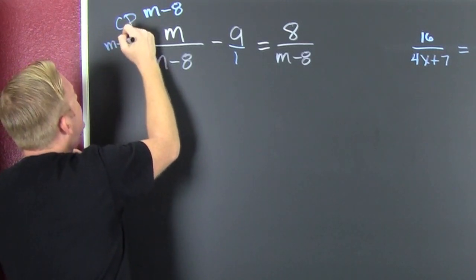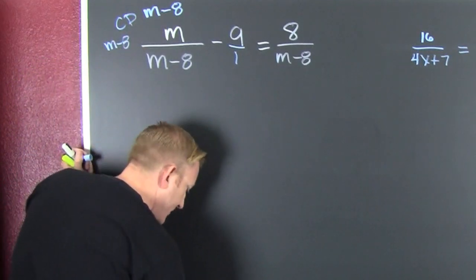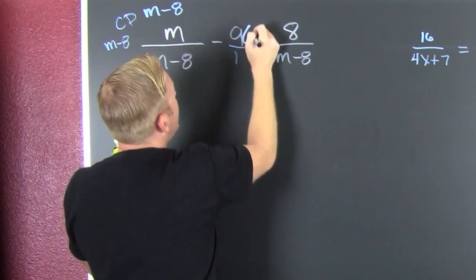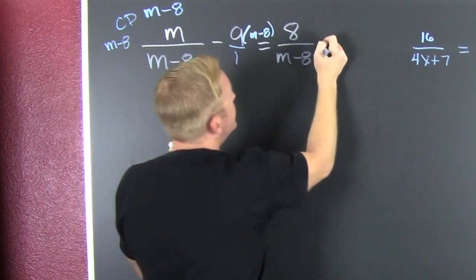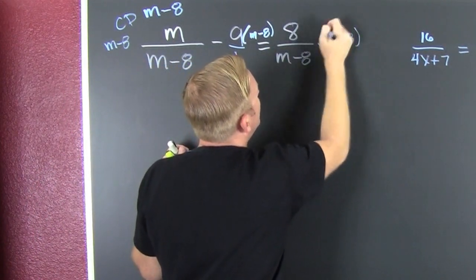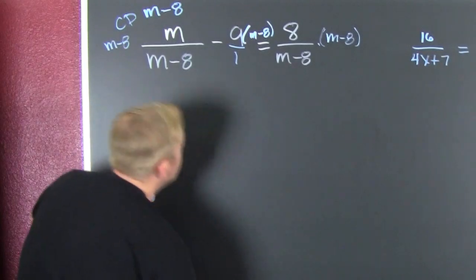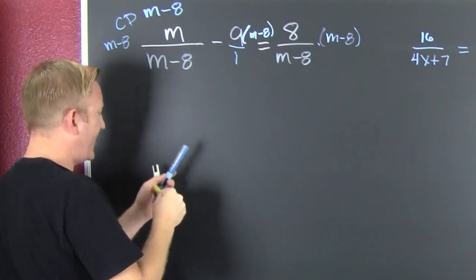So I multiply this by m minus 8. And I multiply this by m minus 8. And I multiply this by m minus 8. And we see they're going to fight.